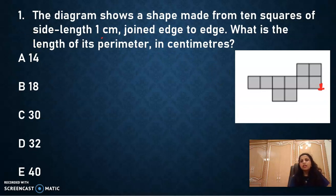So first question says, the diagram shows a shape made from 10 squares of side length 1 cm joined edge to edge. What is the length of the perimeter? So if I talk of perimeter, what does it mean?